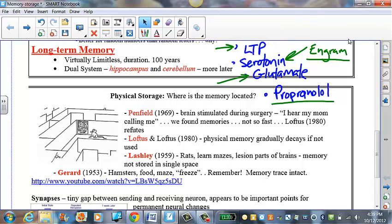Serotonin and glutamate, those are neurotransmitters that influence laying down new memories and drugs that may affect memories. Some experimental drugs such as propranolol, which may limit one's ability to lay down memories.